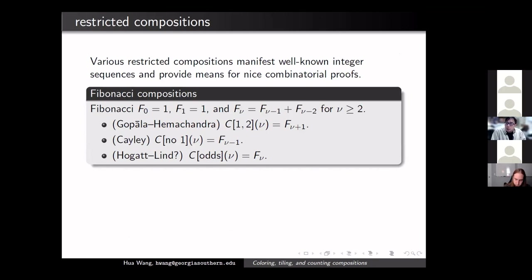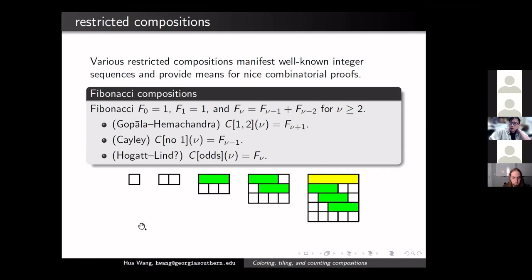Among many interesting things about compositions, there are results related to Fibonacci numbers. The notation C[1,2](μ) denotes the number of compositions with parts 1 and 2. C[no 1](μ) means the number of compositions with no part of size 1. C[odd](μ) means the number of compositions with only odd parts. We won't prove all of this — just one, to illustrate the basic ideas of combinatorial arguments.